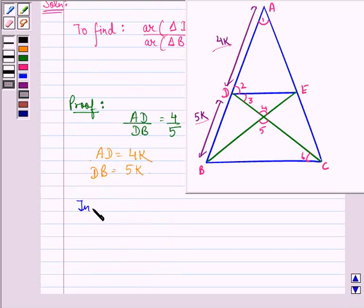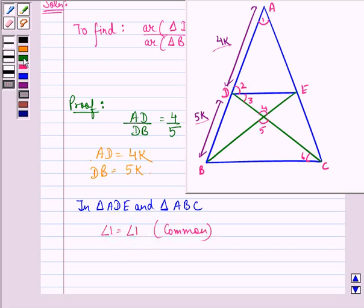Now, in triangle ADE and triangle ABC, angle 1 is equal to angle 1. That is a common angle in both the triangles. Angle 2 is equal to angle ABC because they are the corresponding angles for the parallel lines DE and BC where AB acts as a transversal.